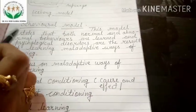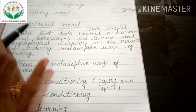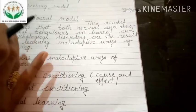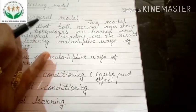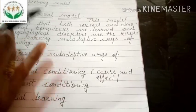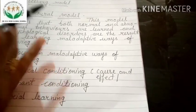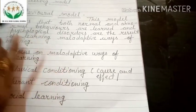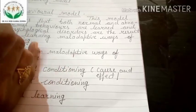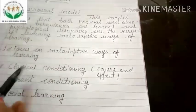If someone has a psychological disorder, it means their learning is maladaptive. Maladaptive means not adjusting adequately or appropriately to the environment or situation. Here we have three models. The first is classical conditioning.